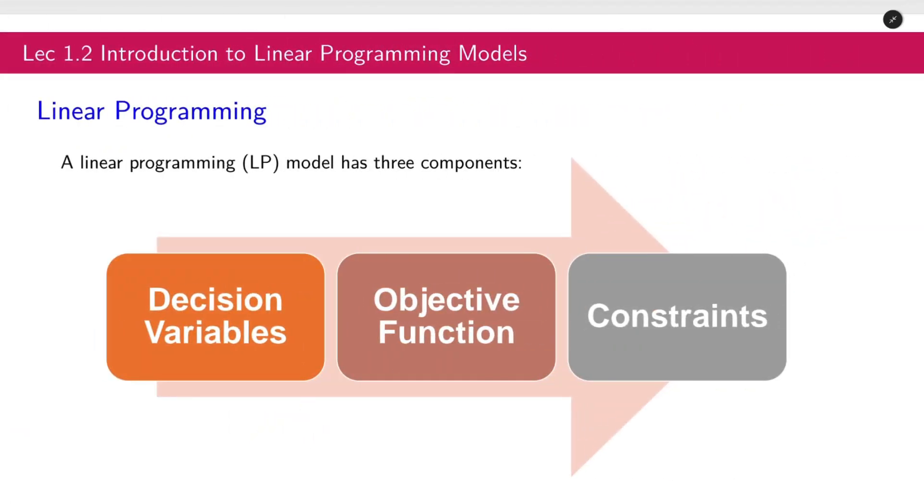These are the components of a linear programming model. We have three: the decision variables, objective functions, and constraints. Always remember these.